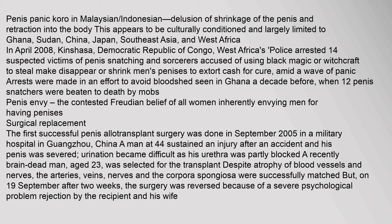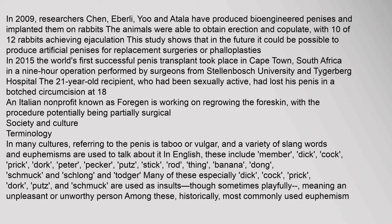In 2009, researchers Chen, Eberly, and Atala produced bioengineered penises and implanted them on rabbits; the animals were able to obtain erections and copulate, with 10 of 12 rabbits achieving ejaculation. This study suggests that in the future it could be possible to produce artificial penises for replacement surgeries or phalloplasties. In 2015, the world's first successful penis transplant took place in Cape Town, South Africa, in a nine-hour operation. The 21-year-old recipient had lost his penis in a botched circumcision at age 18.